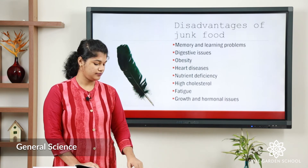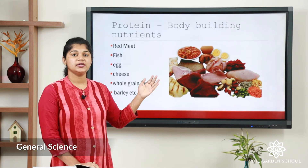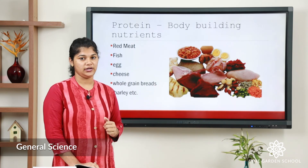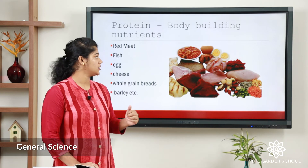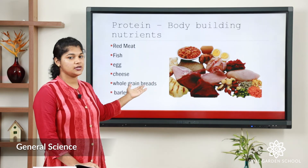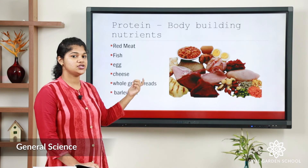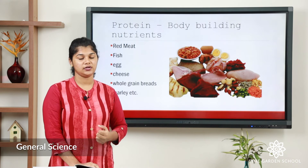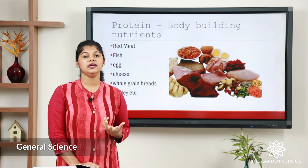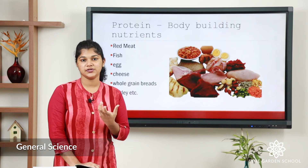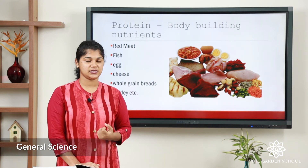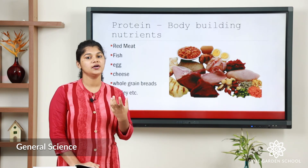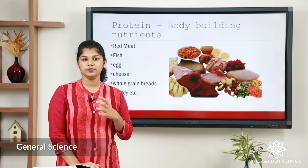These are the disadvantages of junk food, so hope you will avoid it. The next nutrient is protein. Protein is very much needed for our body and it is called a body-building nutrient. Foods like red meat, fish, egg, cheese, whole grain, breads and barley all contain protein. You might have seen protein-rich food used to build up body mass. Health drinks like Horlicks, Boost, and Bone Vita also contain protein.